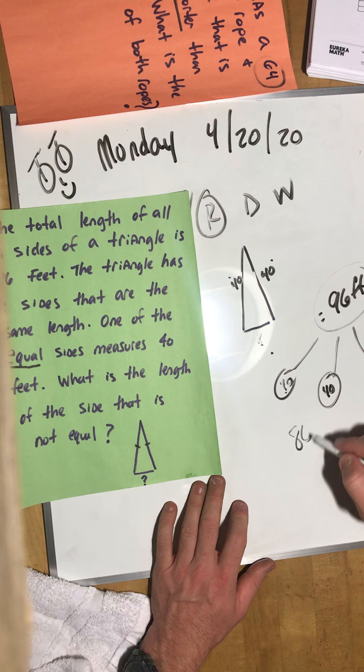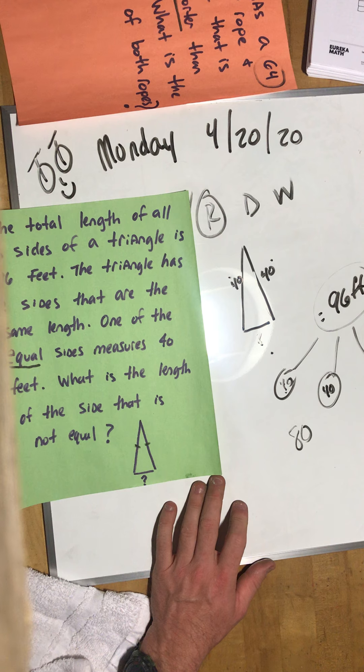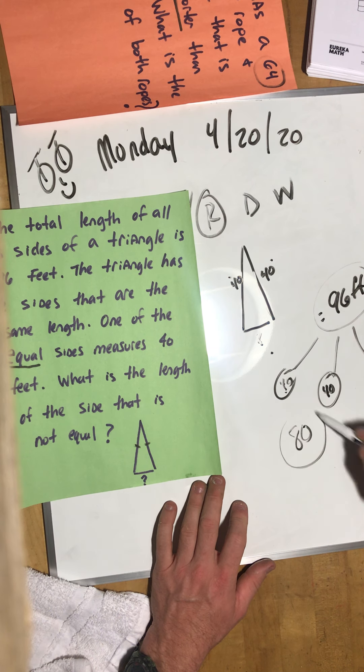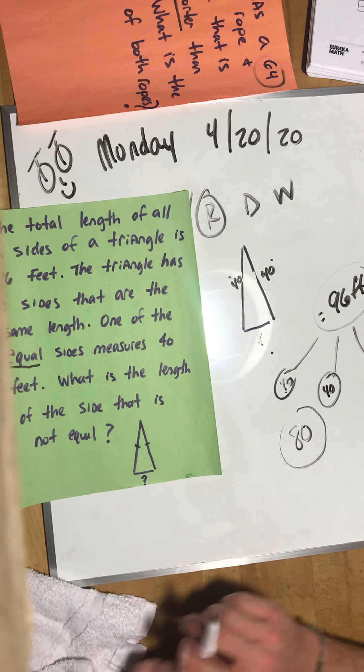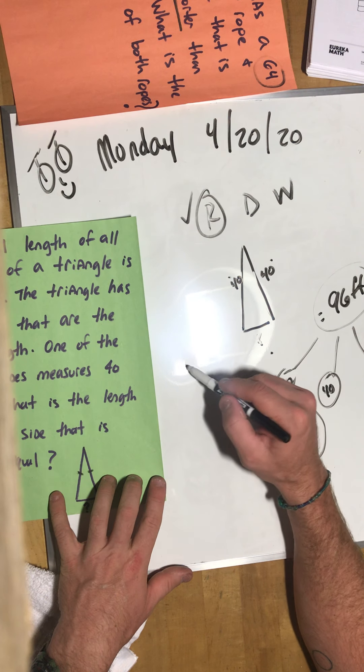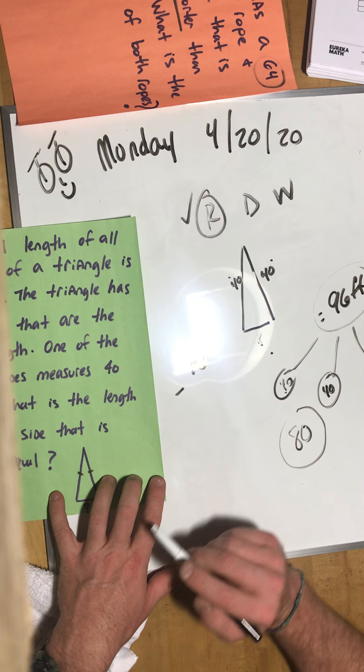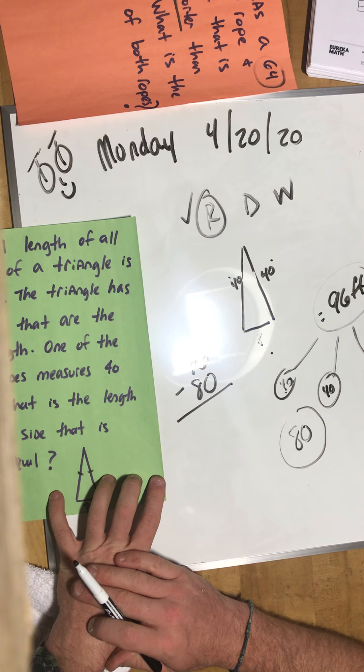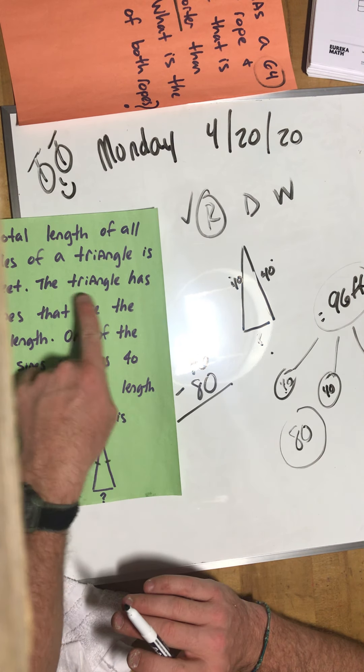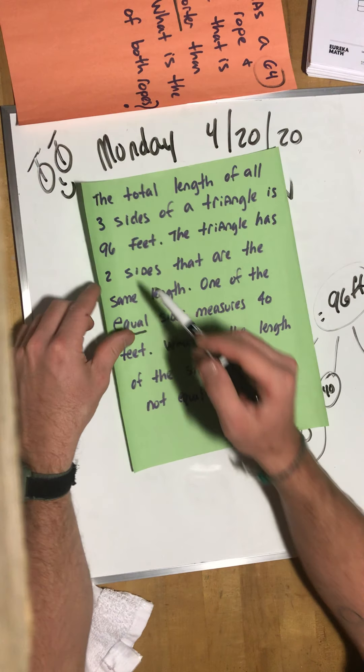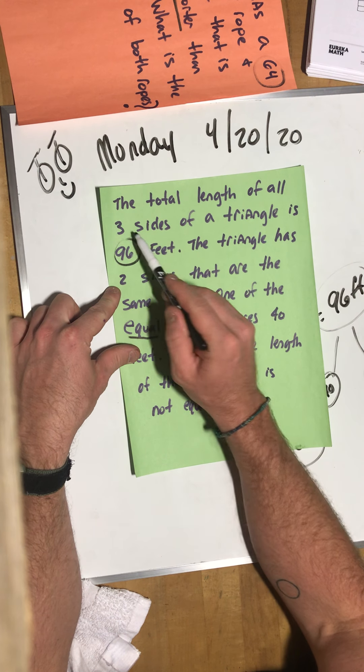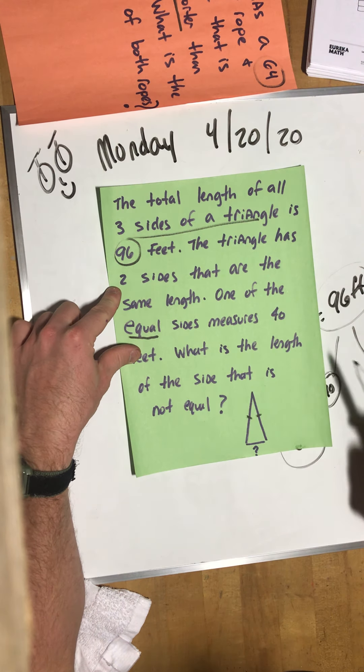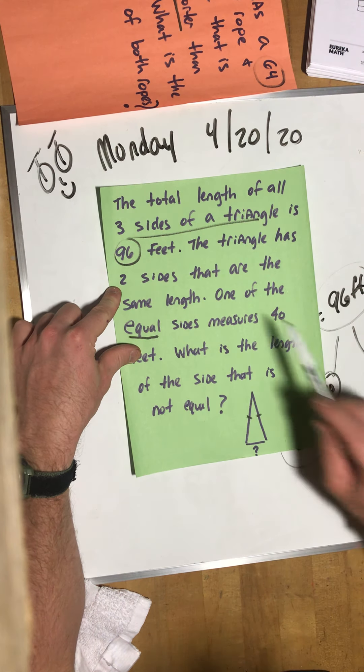What is the length of the side that is not equal? So we have the total, all three parts equals 96. We know 40 and 40, that equals 80 and we don't know this one. So let's do 80, take it away. 96 minus 80.